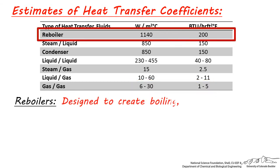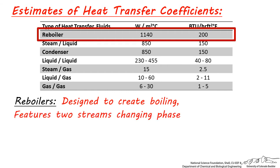Reboilers are heat exchangers which create boiling and have a high heat transfer coefficient because of their physical design and because they usually involve both streams in the heat exchanger changing phase. So the hot stream will condense into a liquid and the cold stream will be brought to a boil.